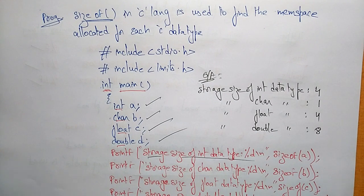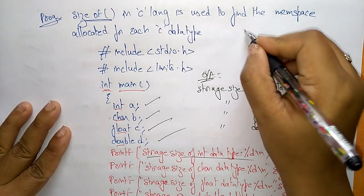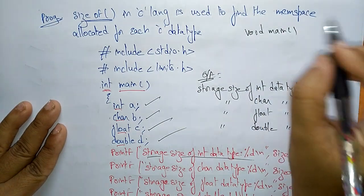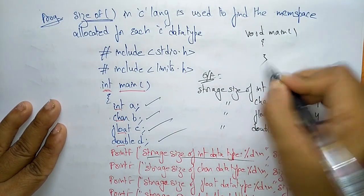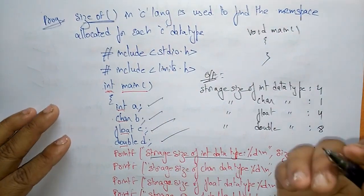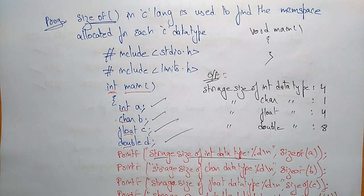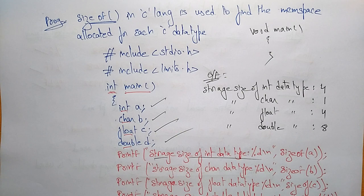Void is simply a data type that does not return any value. Suppose void main — void main means the function does not return any value. That is about void. Coming to derived data types, those derived data types are pointers, structures, and unions. Arrays also — those will be explained whenever we are discussing the topics of pointers, arrays, structures, and unions.